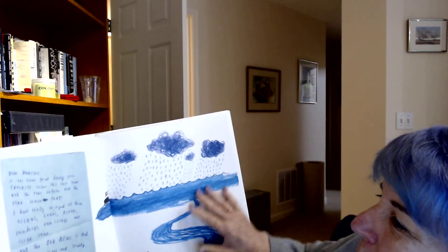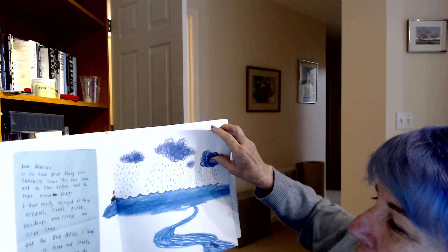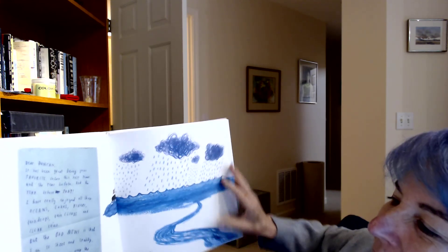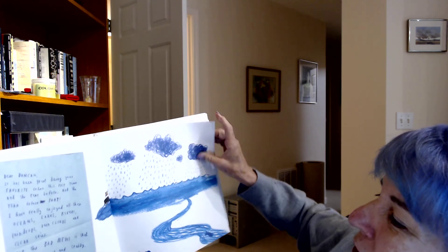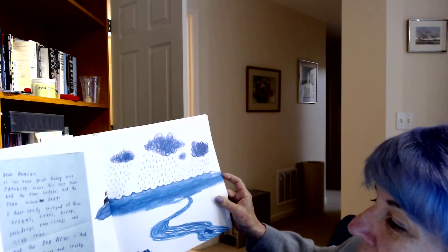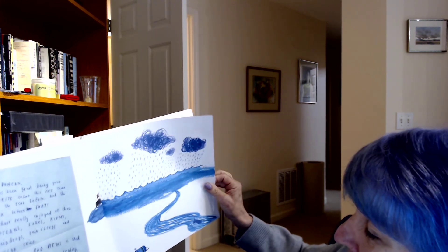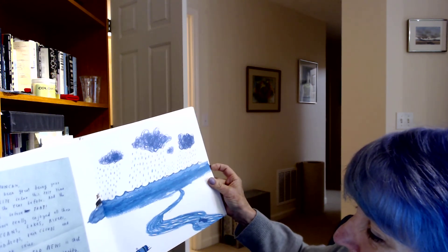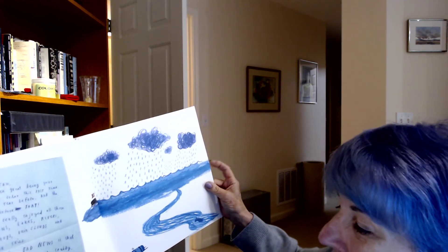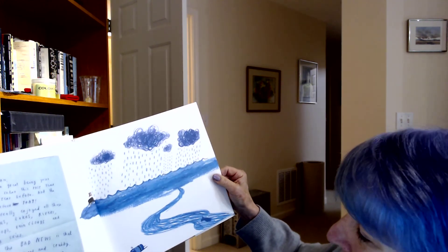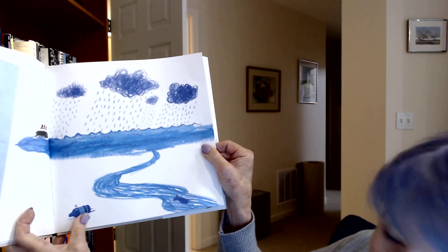Dear Duncan, it's been great being your favorite color this past year and the year before, and the year before that. I've really enjoyed all those oceans, lakes, rivers, raindrops, rain clouds, and clear skies. But the bad news is, I am so short and stubby, I can't even see over the railing in the crayon box anymore. I need a break. Your very stubby friend, Blue Crayon. Oh, can you see how small he is down here? He's so short.